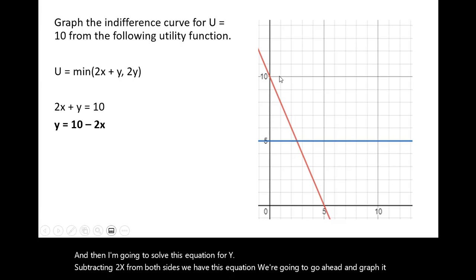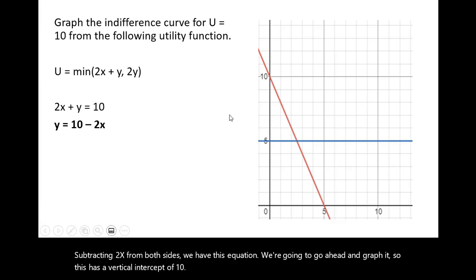So this has a vertical intercept of 10 and a slope of minus 2. So when x is 5, y is 0, and that's this horizontal intercept.